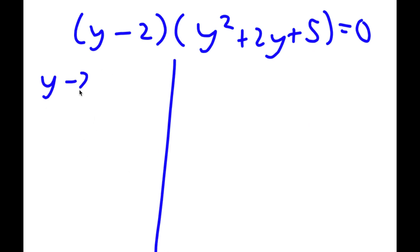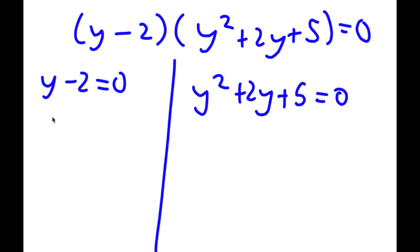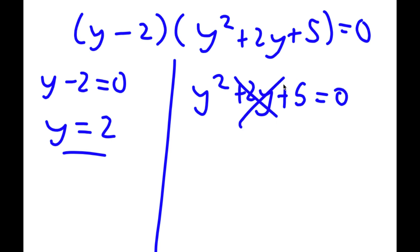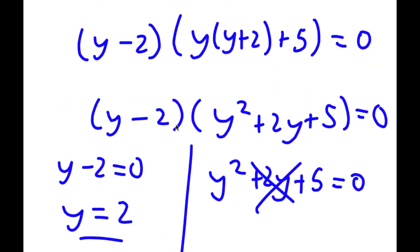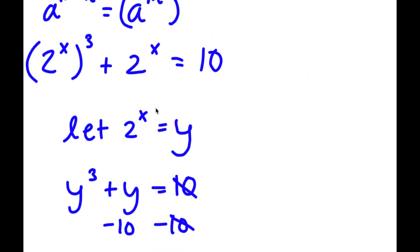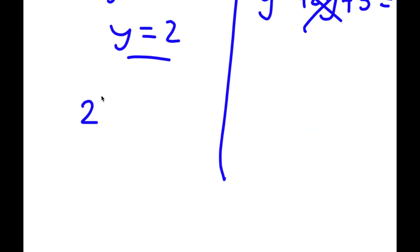This gives me two equations: y minus 2 is equal to 0, so y equals 2; and y squared plus 2y plus 5 is equal to 0. For the quadratic, if you plug everything into the quadratic formula, you get that there is no real solution because it results in the square root of a negative number. So y equals 2 is my only solution. Remember how we set 2 to the power of x equal to y, so now I have 2 to the power of x is equal to 2, which means x equals 1.